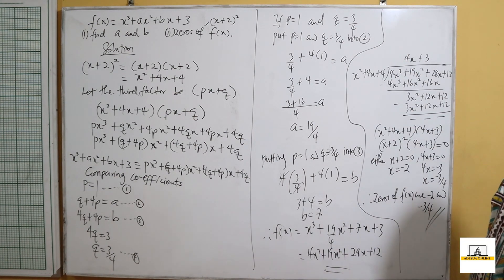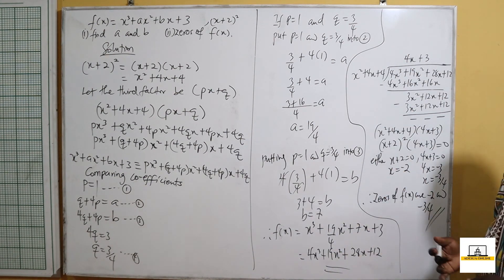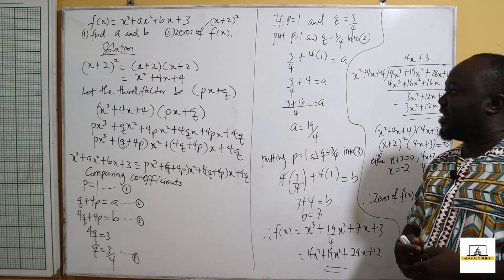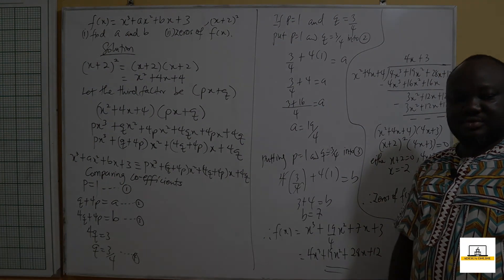Therefore, the zeros of f of x are negative 2 and negative 3 over 4. This brings us to the end of this question.